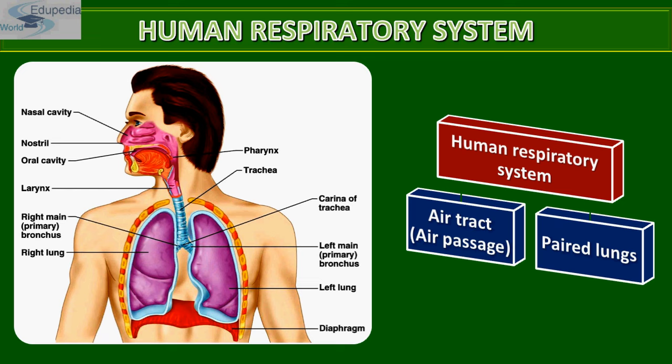Earthworms use their moist cuticle, and insects have a network of tubes to transport atmospheric air within the body. Special vascularized structures called gills are used by most aquatic arthropods and molluscs, whereas vascularized bags called lungs are used by terrestrial forms for gas exchange. Among vertebrates, fishes use gills, while reptiles, birds, and mammals respire through lungs. Amphibians like frogs can also respire through their moist skin.